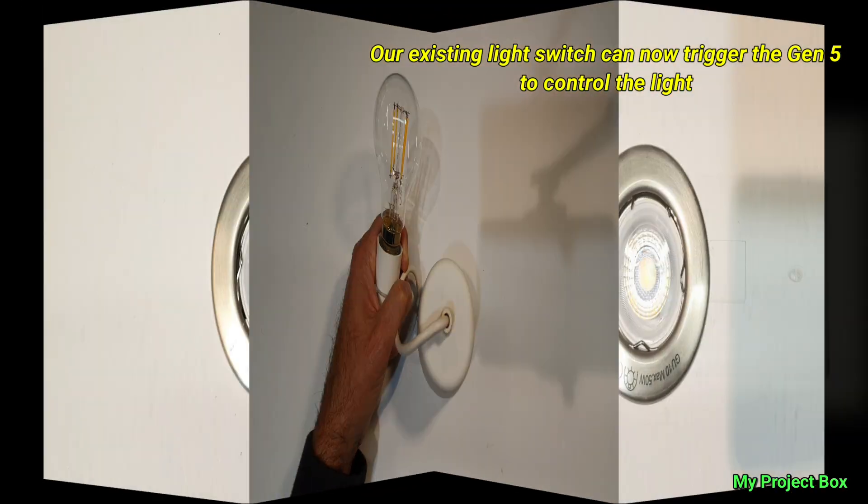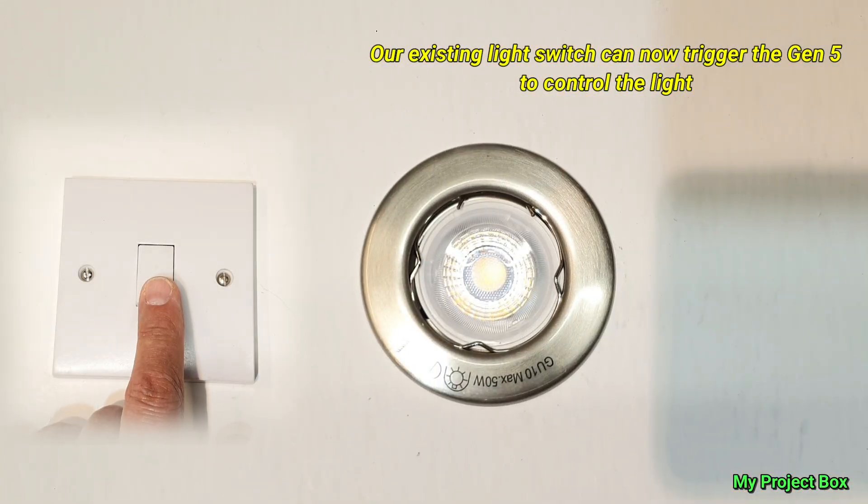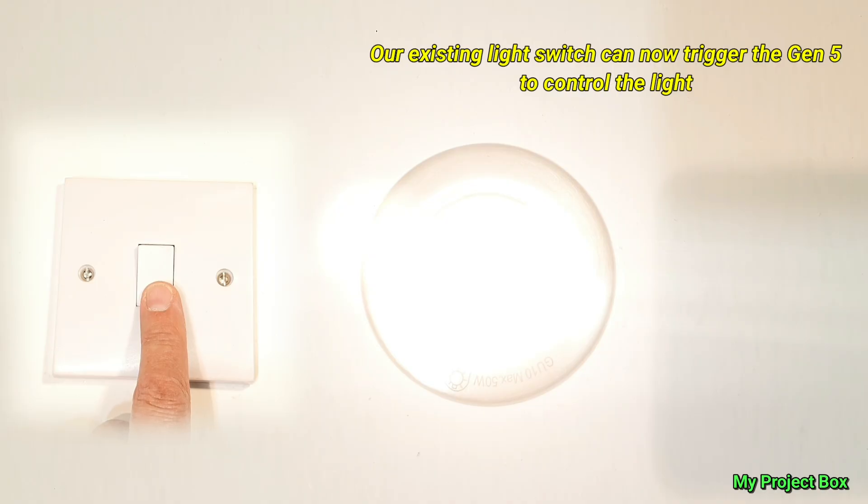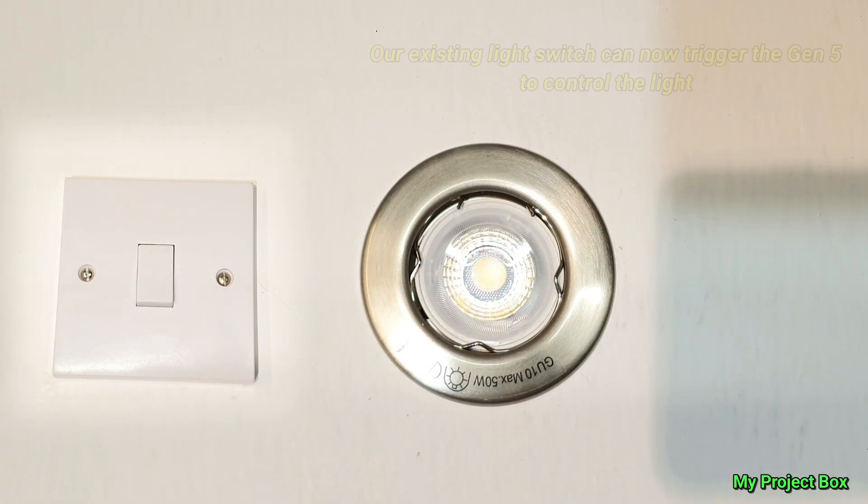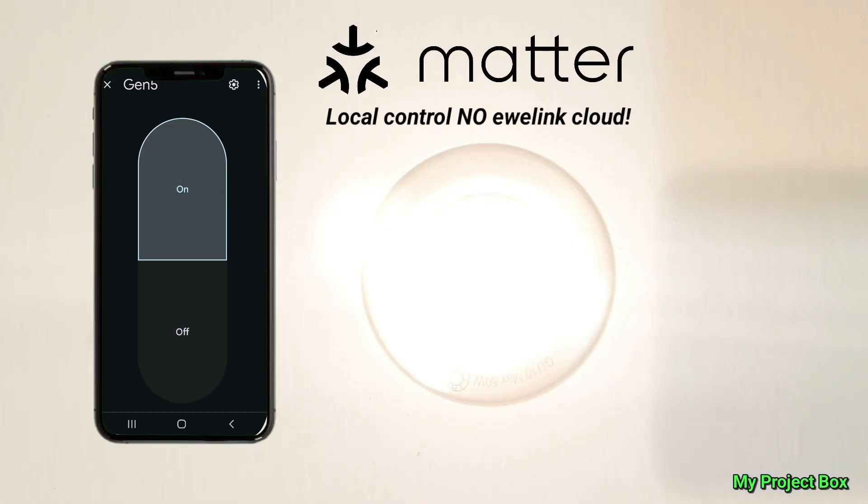Now let's test it with the ceiling light. Our Magic Switch works a treat. We can control it locally cloud-free without eWeLink over Matter on Google Home. Excellent.